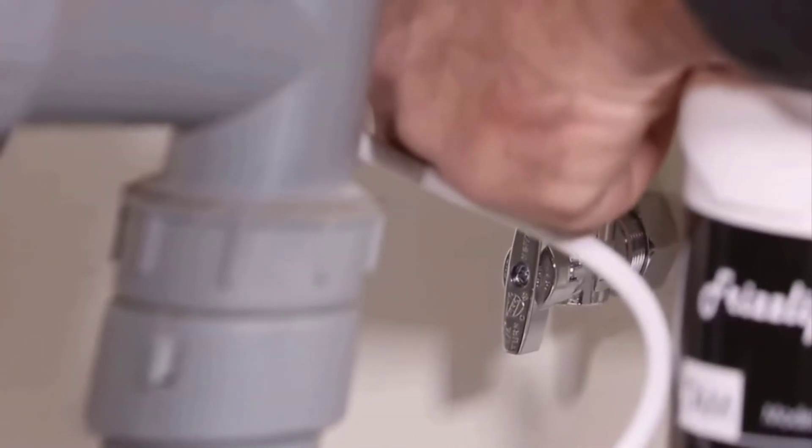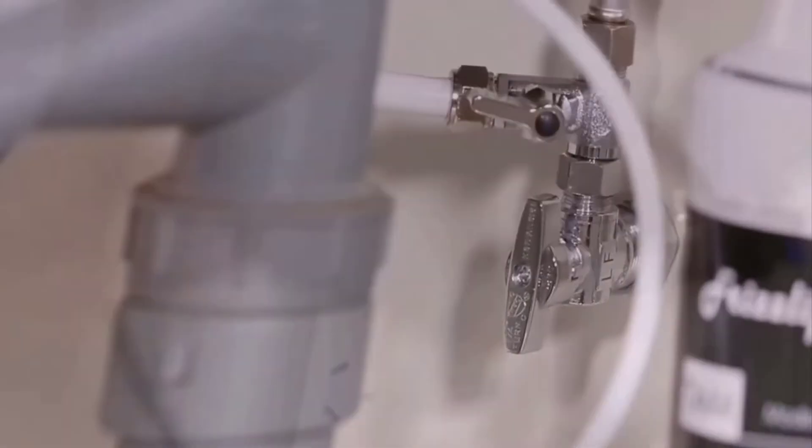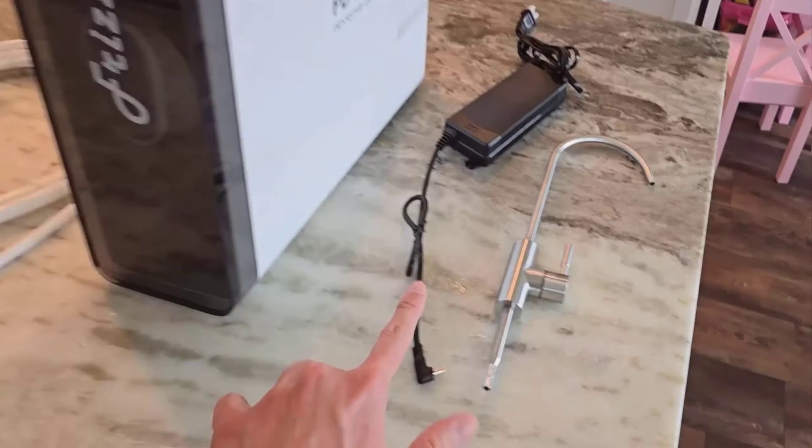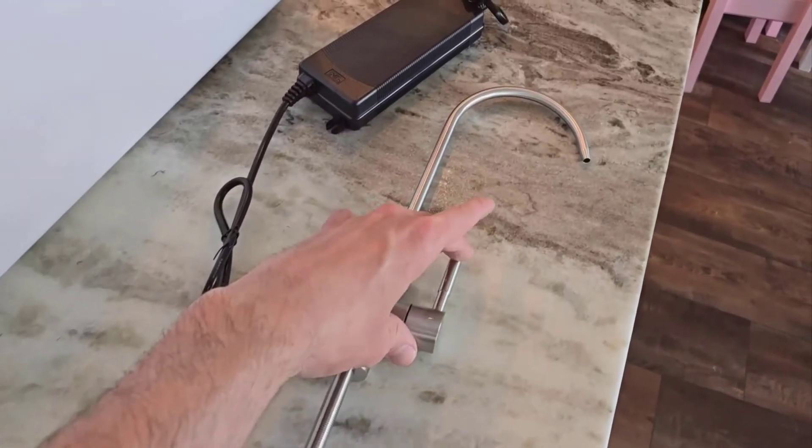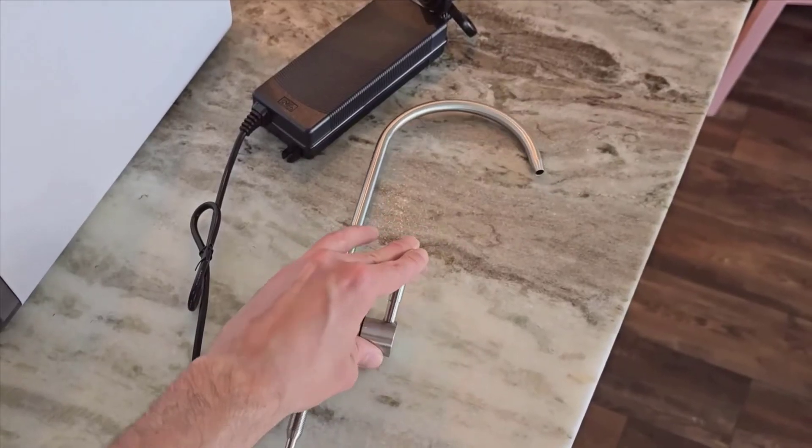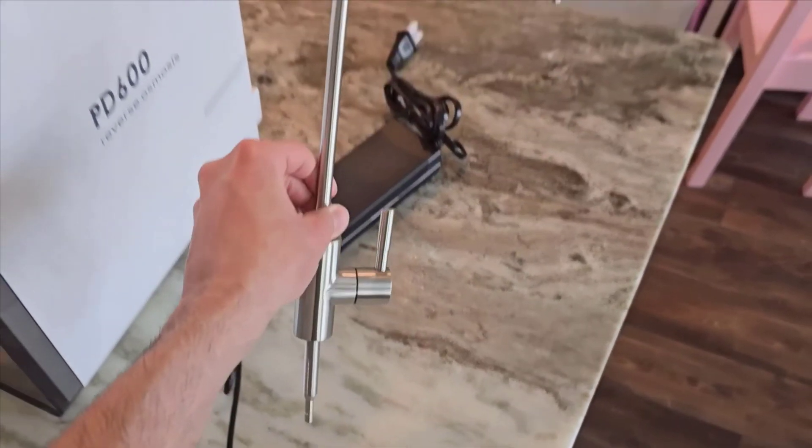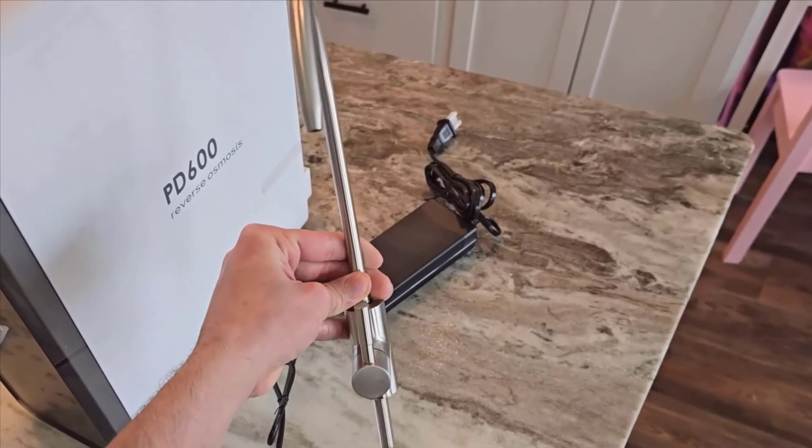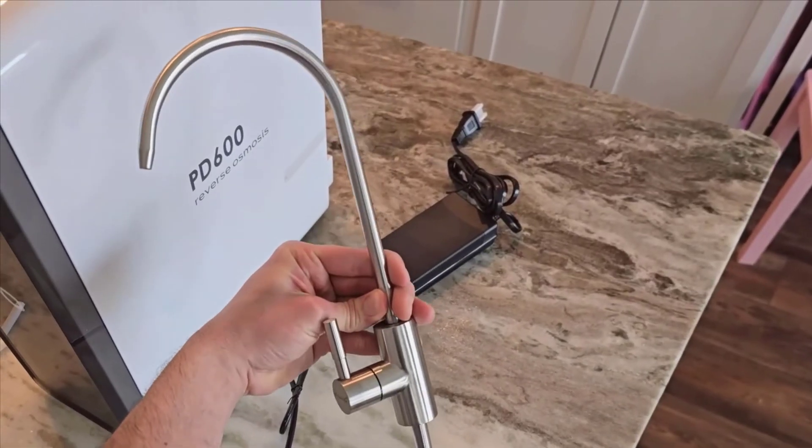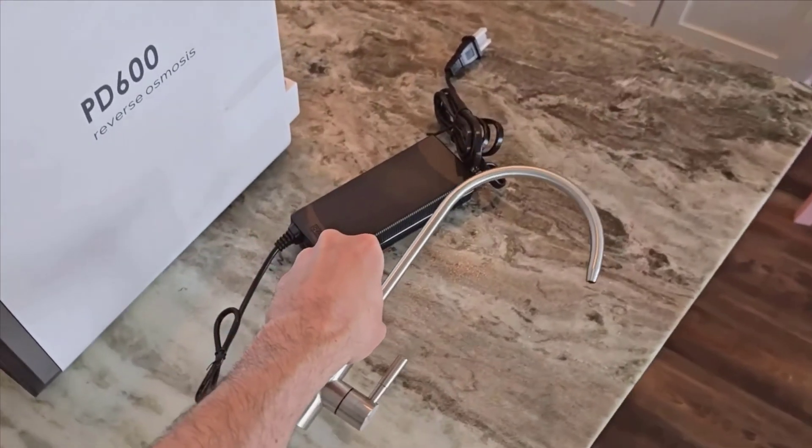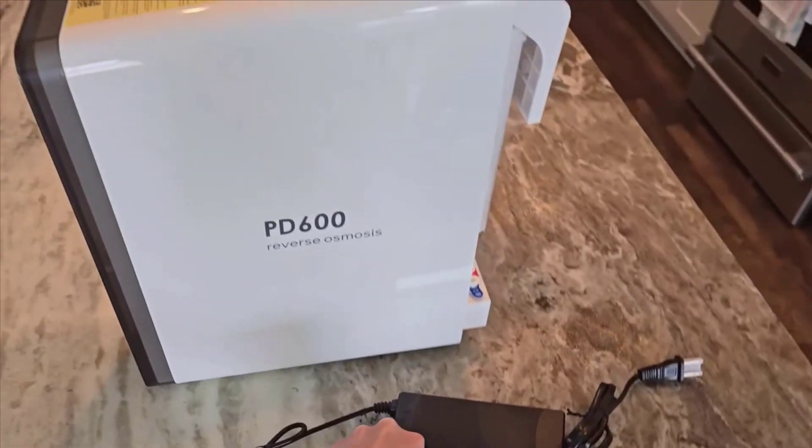One of my favorite features is the smart LED display. This display keeps you informed about the water quality and the filter lifespan, ensuring your system is always at its best with minimal effort on your part. The LED display is intuitive and easy to read, making it simple to know when it's time to change the filters or if there's an issue with water quality.